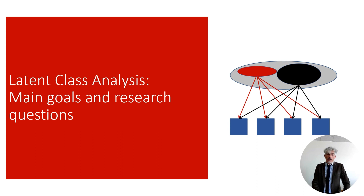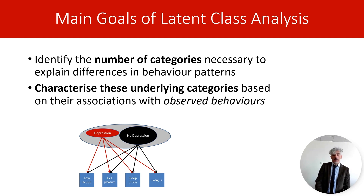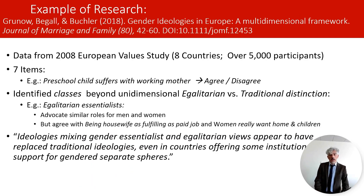I will now talk about the main goals of latent class analysis and provide some examples of research questions that can be answered using it. Latent class analysis is similar to factor analysis, as I highlighted, but the main difference is that what explains differences in behavioral patterns is not a continuous dimension but a categorical variable. Latent class analysis can be used to identify the number of categories necessary to explain differences in the behavioral patterns we observe, and it is also used to characterize these underlying categories based on their associations with observed behaviors.